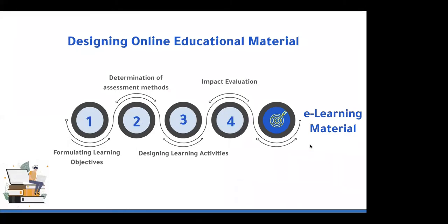Designing online educational material ideally goes through four stages. First, formulating the learning objectives — this is the most important phase. Second, determining the assessment methods — how would you like to assess your students' knowledge? Third, designing the learning materials and activities. Fourth, measuring the impact of the course. All of these phases together form the e-learning material.